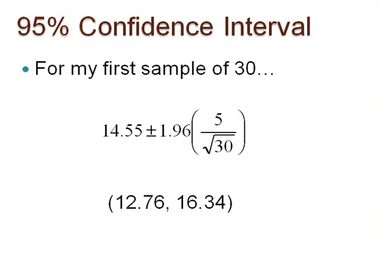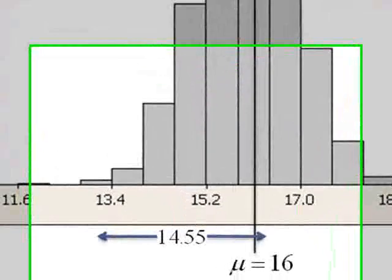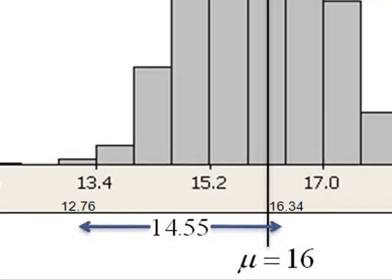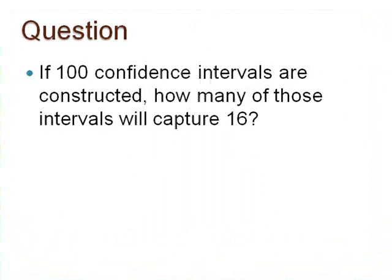Did you get the 95% confidence interval for the first sample of 30 to be 12.76 to 16.34? Let's visualize this below the graph. Did you notice that our population mean weight of 16 is captured by this confidence interval? Now, in the same way, I will construct 100 confidence intervals based on the first 100 sample means from the 1,000 samples taken previously. Pause here to estimate the number of intervals you believe will capture 16.